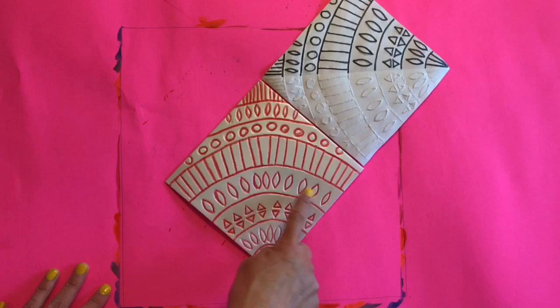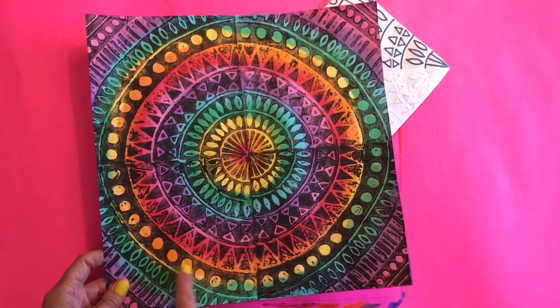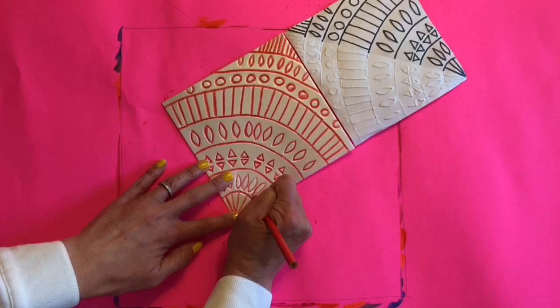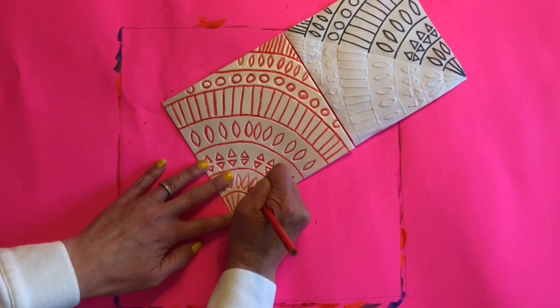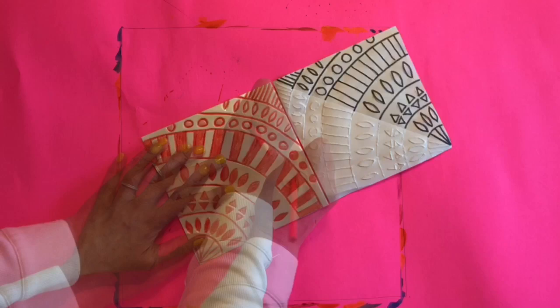The next step is to fill in some of the shapes you created in your design. Wherever you fill in a shape, it will reveal more colors from your rainbow in your painting that you created. You don't need to fill in as many shapes as I am here. You can fill in as many or as little as you like.